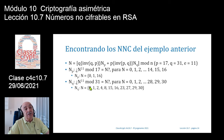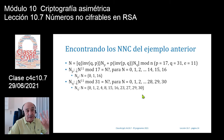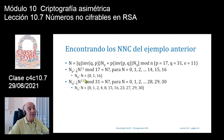Me sale entonces el 0, el 1, el 2, el 4, 8, 15, 16, 23, 27, 29 y 30. Todos esos números van en claro. Es decir, si hago 23 elevado a 11 módulo 31, me sale 23.